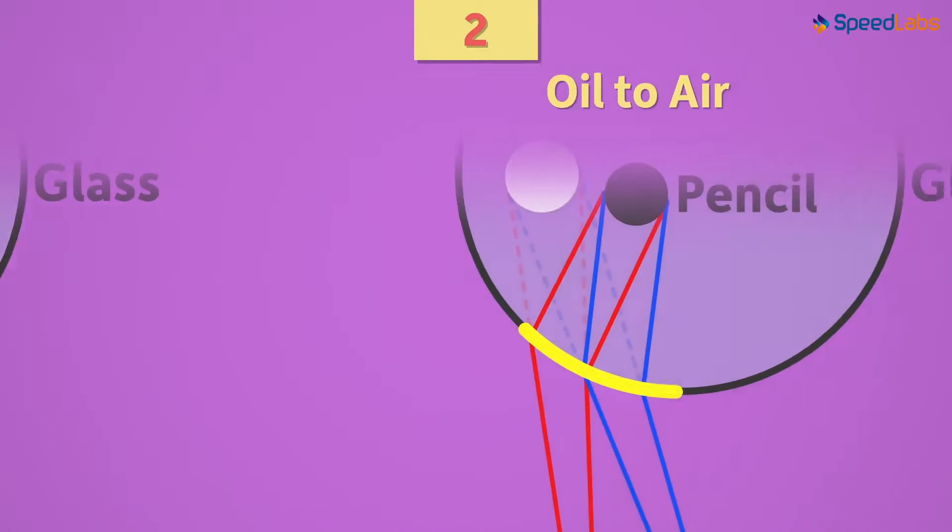Similarly, in the second case of oil to air, light is travelling from an optically denser to an optically rarer medium. Hence, it also bends away from the normal.